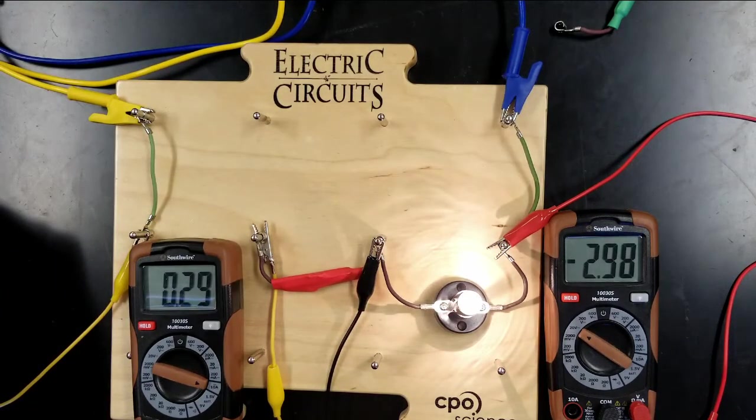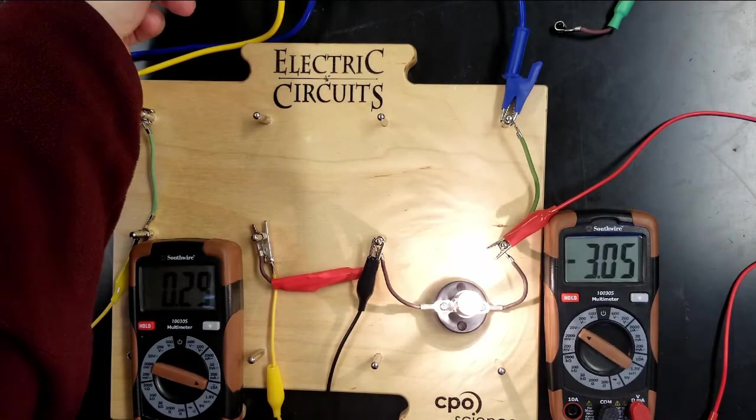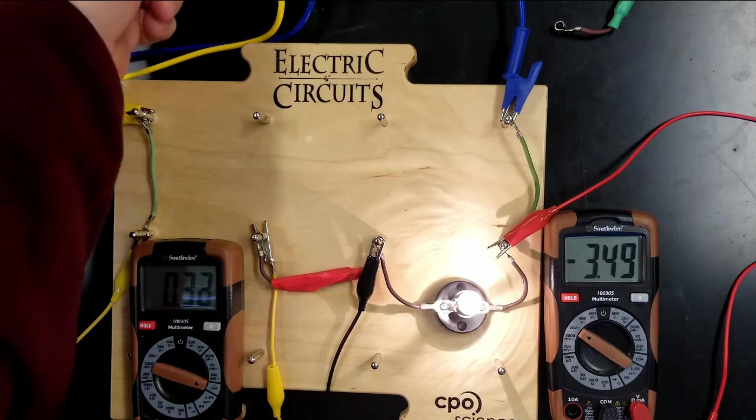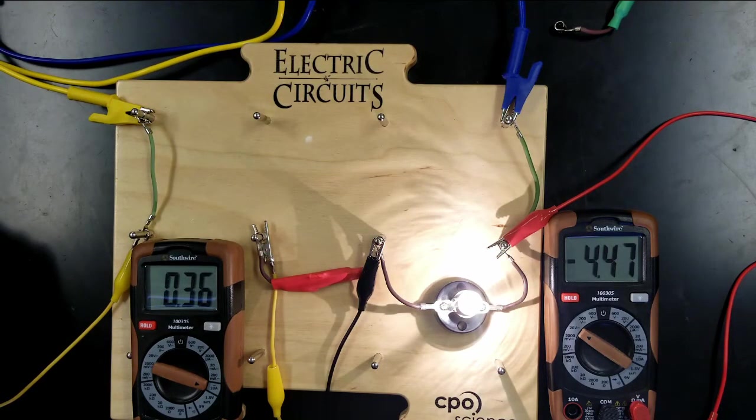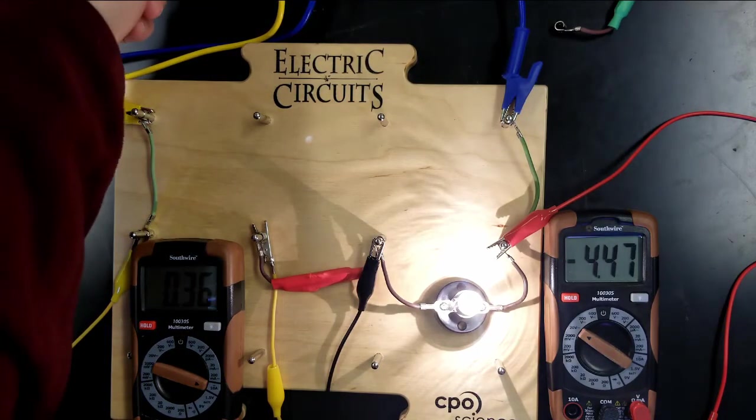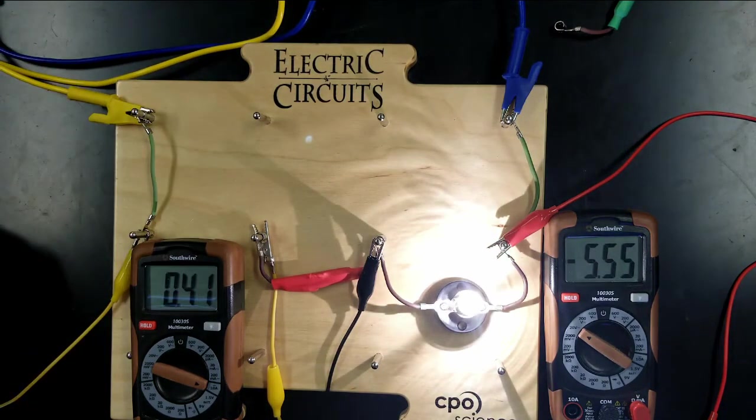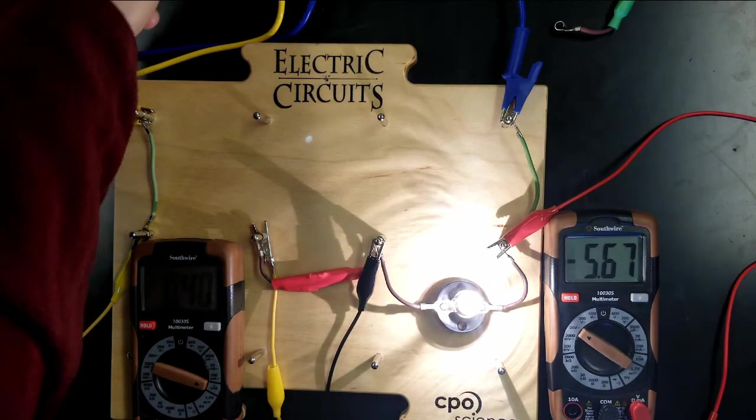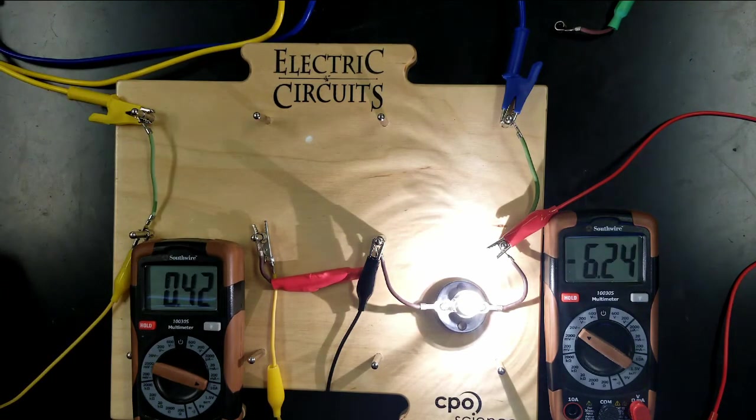2.98 volts and 0.29 amperes. 3.48 volts, 0.32 amps. 4.47 volts and 0.36 amperes. 5.6 volts, 0.41 amperes.